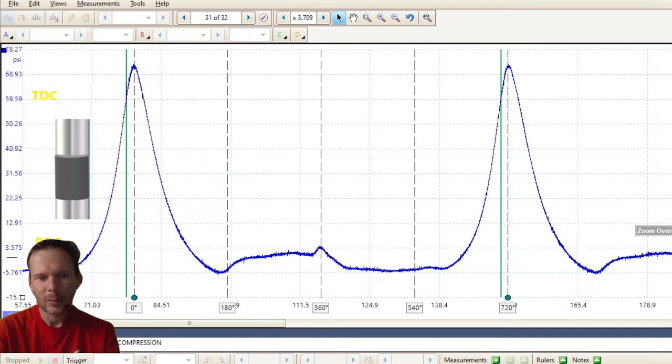So TDC compression at zero, TDC exhaust at 360, and TDC compression again at 720. And this is just one cylinder that we're looking at here.